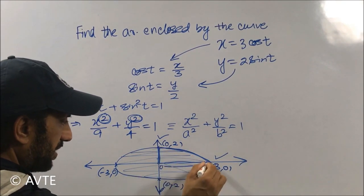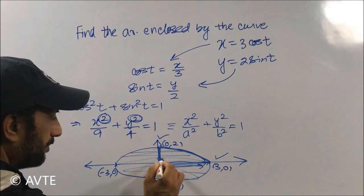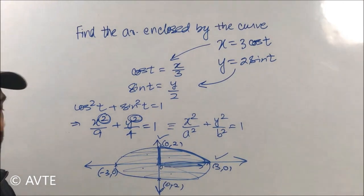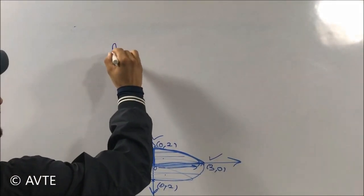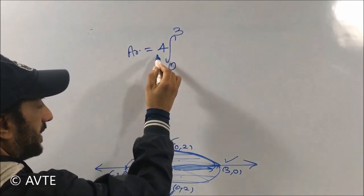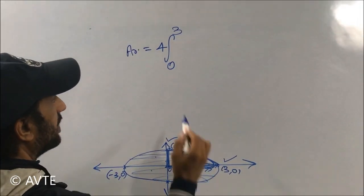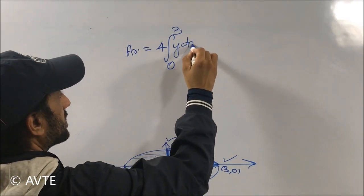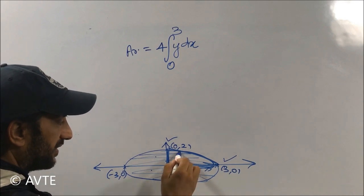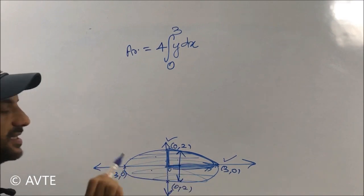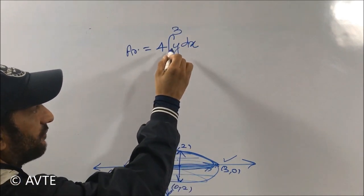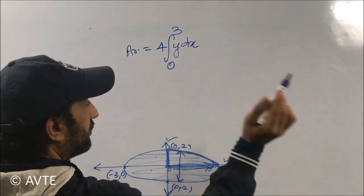So what we will be doing, we'll find the area of the first quadrant and we'll multiply that with 4. So the area is 4 times 0 to 3 Y dx. But since this is not a function, you can see that by putting one X component we are getting two outputs, so this is not a function. So first of all we have to create this in the form of Y equals f(X).